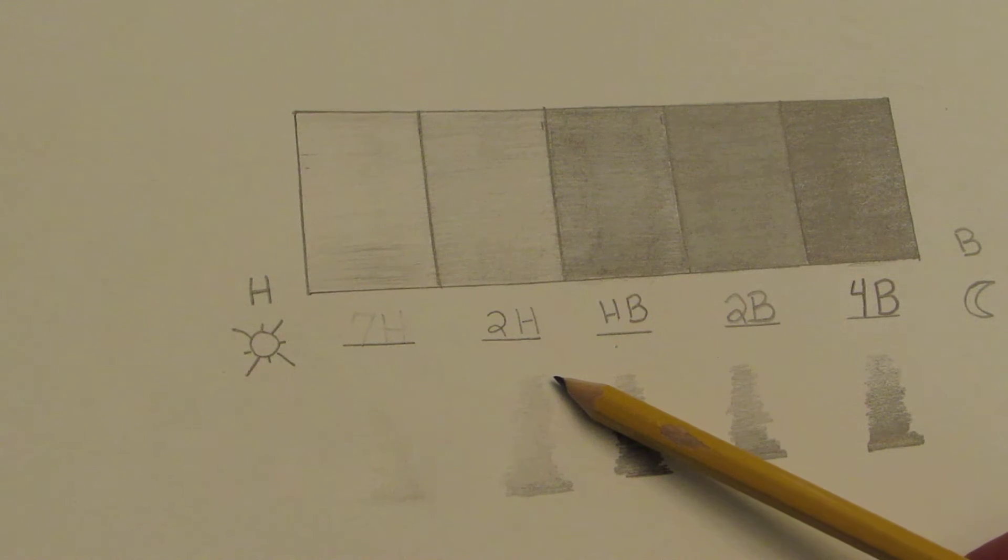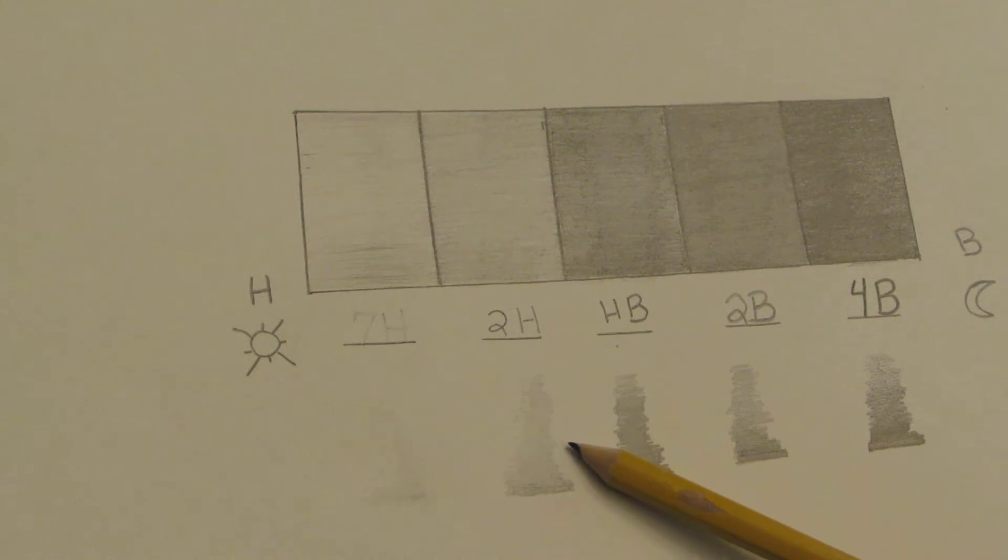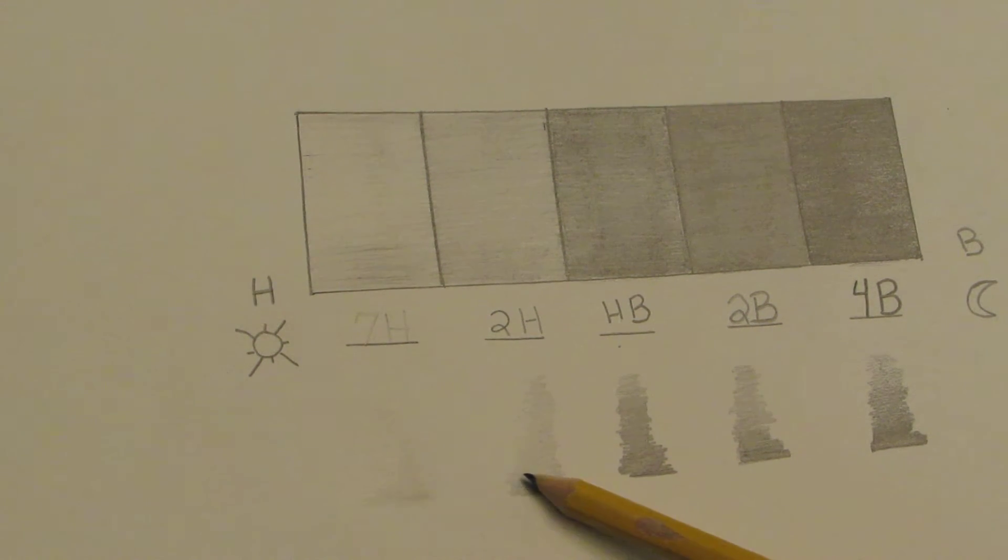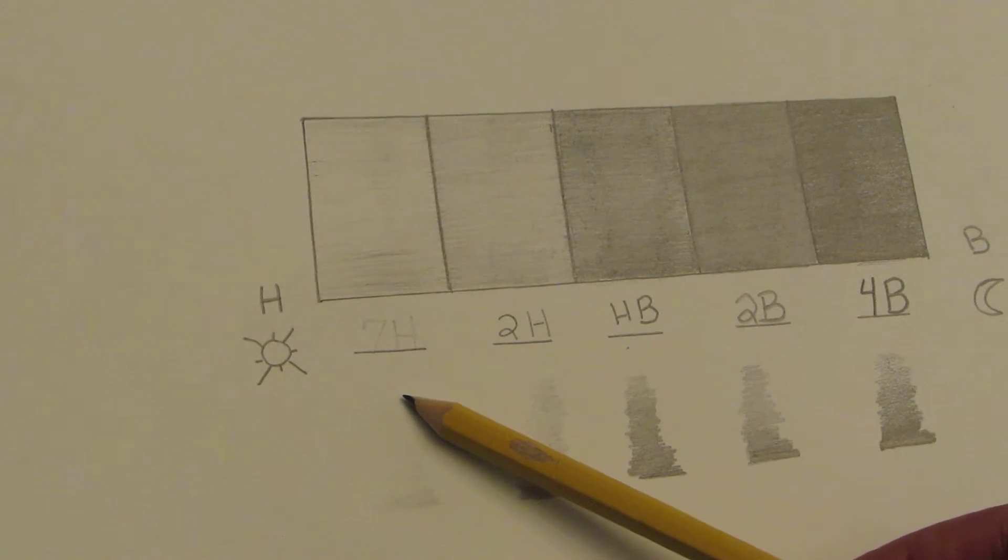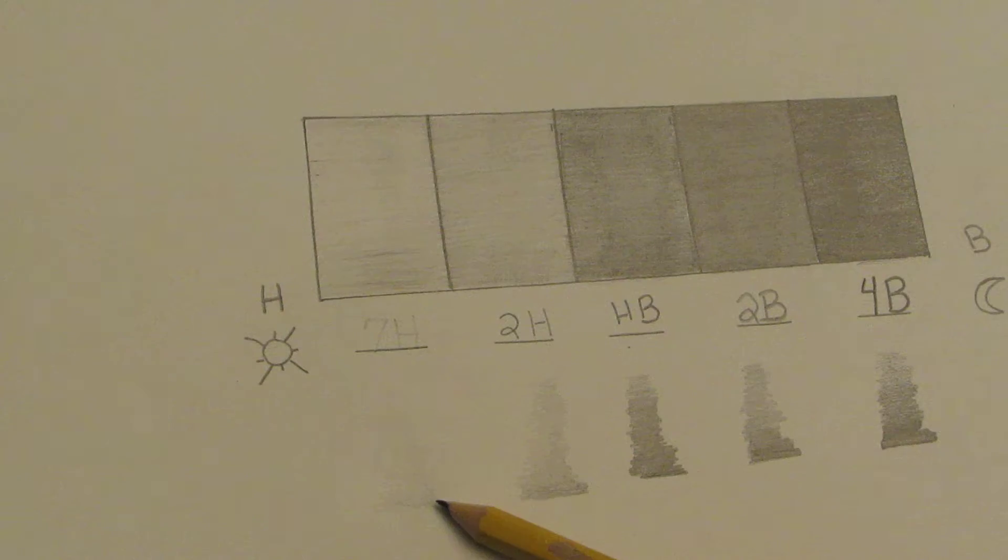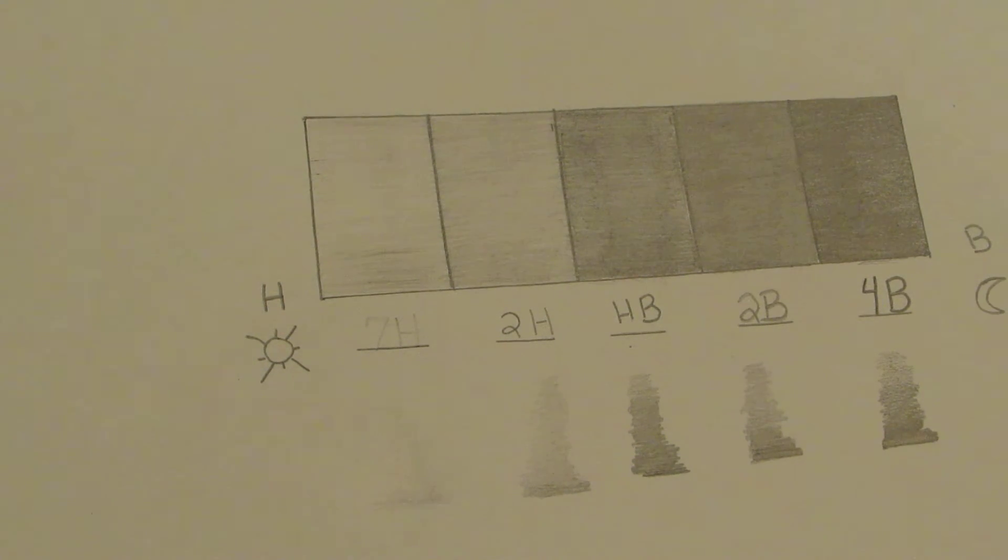But what I'd like you to do down at the bottom underneath each one is show a range. So what is the lightest you can make that pencil go all the way to the absolute darkest? And you can really tell the difference over here with my 7H. It is super light and then it stays pretty light.